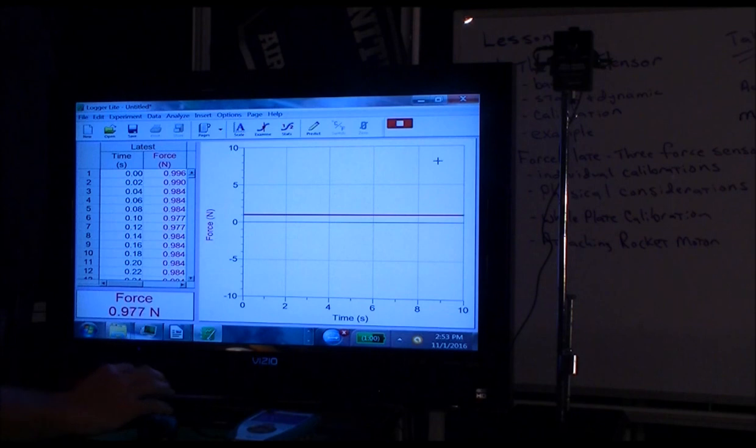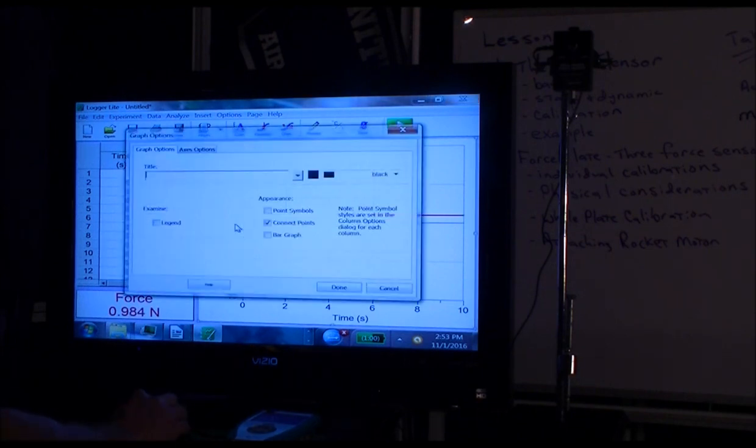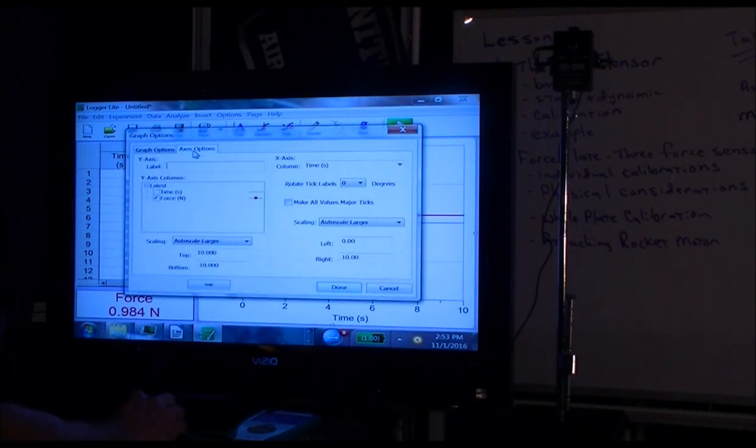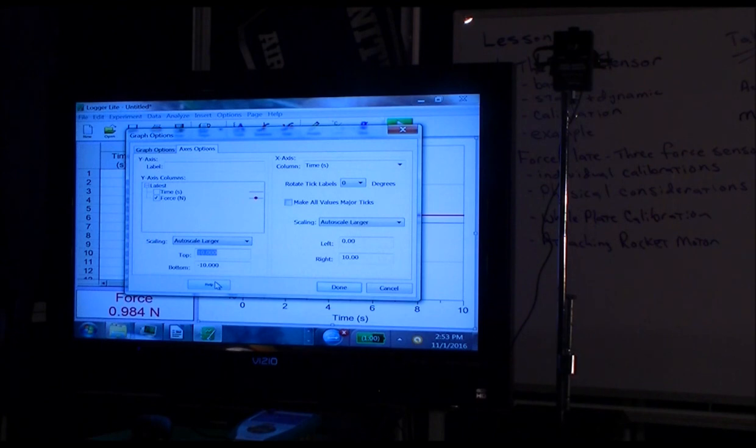We could zoom in. And the way to zoom in here is that I think if you click on the axis, you'll get axis options. And rather than going from negative 10 to 10, let's make the top of the scale 2 or so and let's make the bottom of the scale 0. So we're just zooming in vertically.